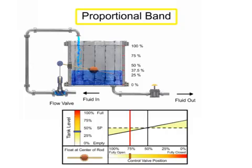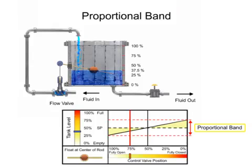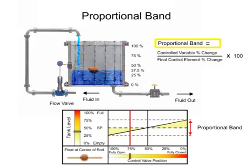Proportional band is defined as the percentage of change in the controlled variable which causes the final control element to go through 100% of its operating range. Proportional band is calculated by dividing the controlled variable percent change by the final control element percent change, multiplied by 100.